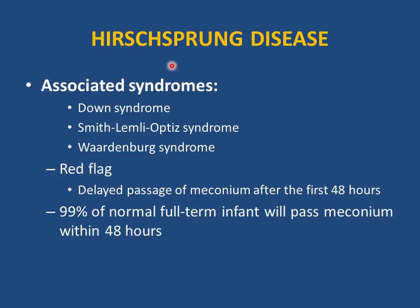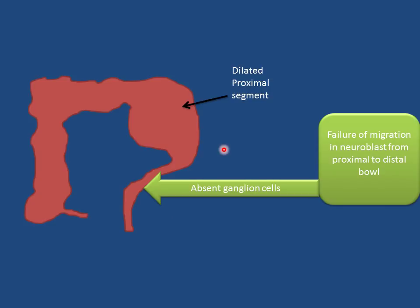Hirschsprung disease is the most common cause of intestinal obstruction in neonates. It is associated with syndromes such as Down syndrome, Smith-Lemli-Opitz syndrome, and Waardenburg syndrome. Red flag: delayed passage of meconium beyond the first 48 hours. Note that 99% of normal full-term infants pass meconium in the first 48 hours. Pathophysiology: absent ganglion cells in a segment of bowel, causing a narrow obstructed segment with a dilated proximal healthy segment due to stool accumulation.